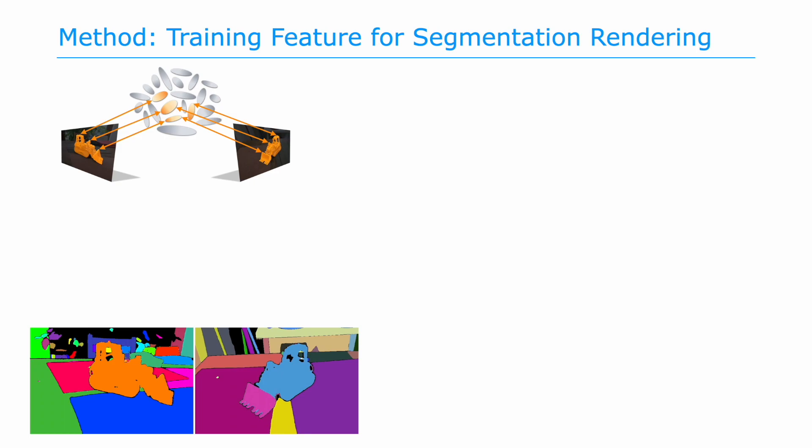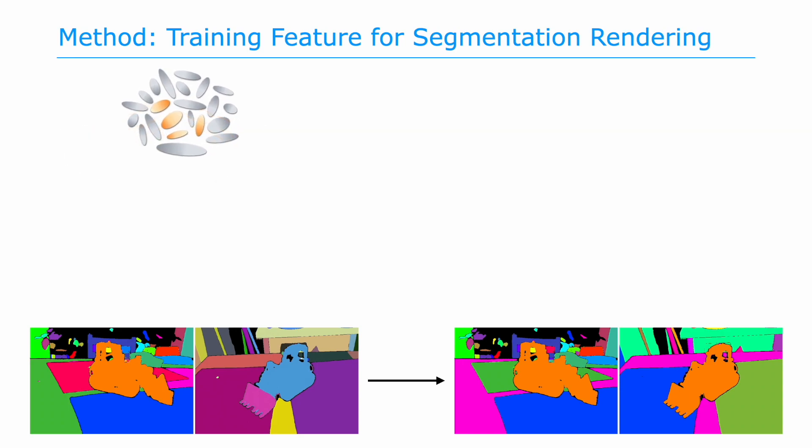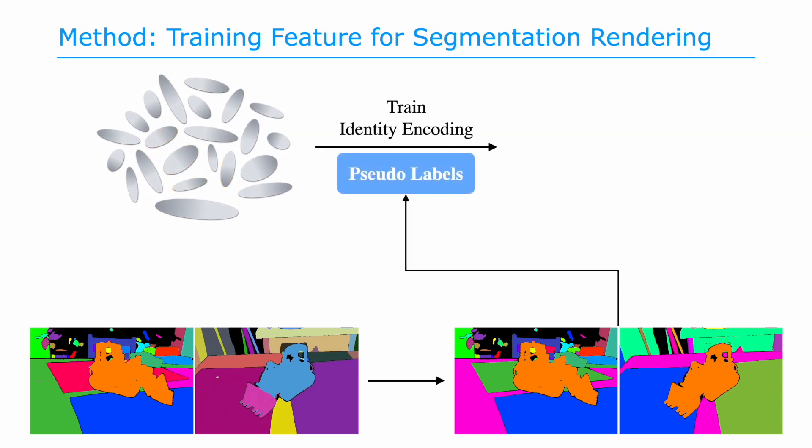After the mask association and group ID assigning process, masks projected by the same group of Gaussians have the same group ID across different views. We use those associated masks as pseudo-labels to train a feature representing the group ID for segmentation rendering.